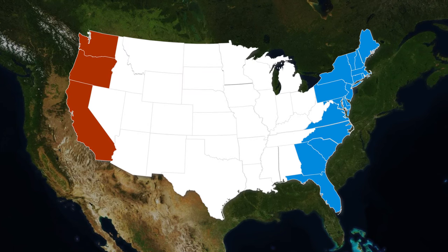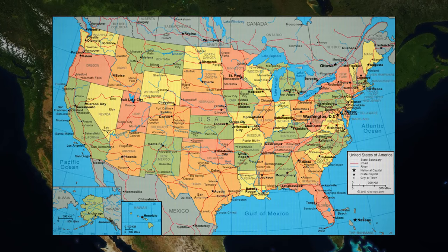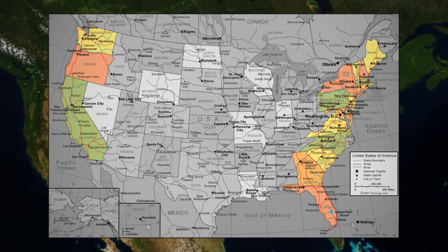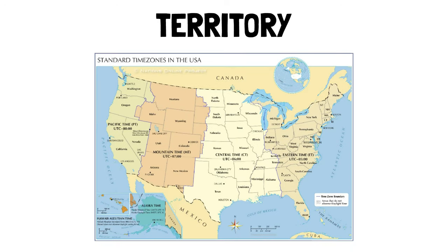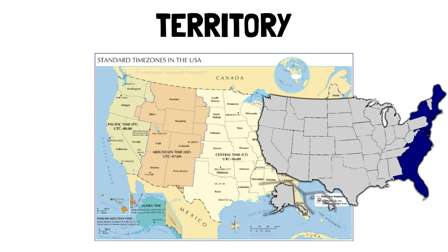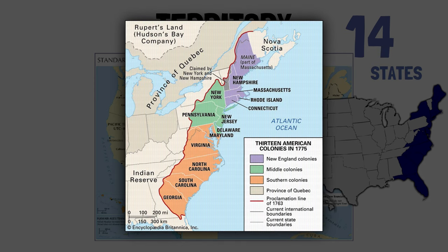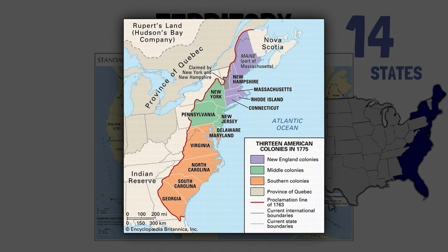The first differences we should take into account are geographical and territorial ones. As the name indicates, the West coast is in the West and the East is in the East. The East coast borders the Atlantic Ocean and Canada, while the West borders the Pacific Ocean, Canada, but also Mexico. Being three hours ahead, the East coast technically has 14 states, very closely related to the initial 13 colonies that rebelled against the British and first established the United States — one exception being Florida, which was still Spanish at the time.